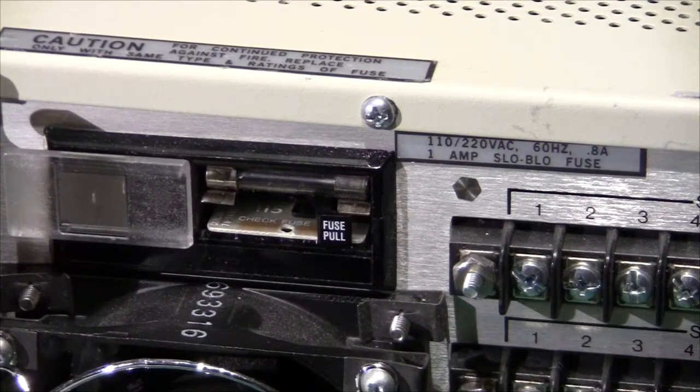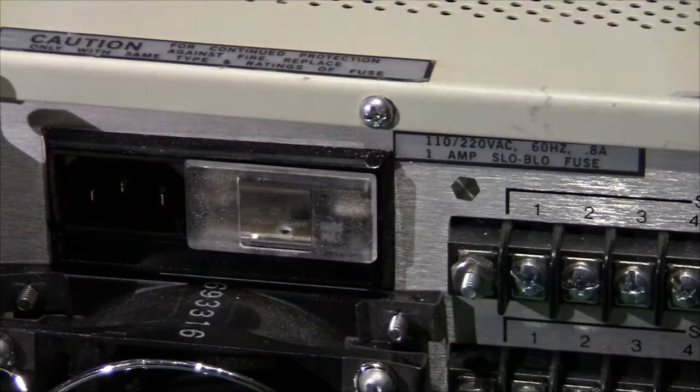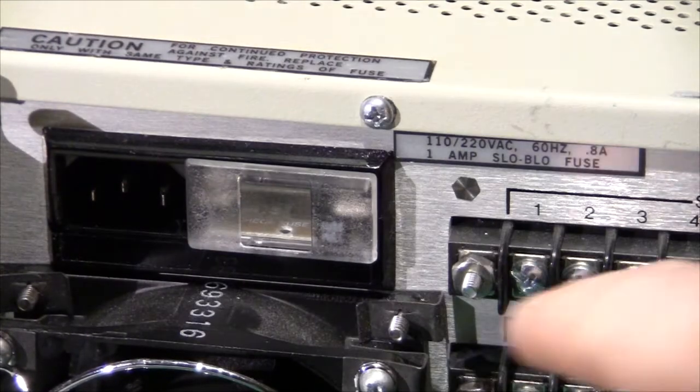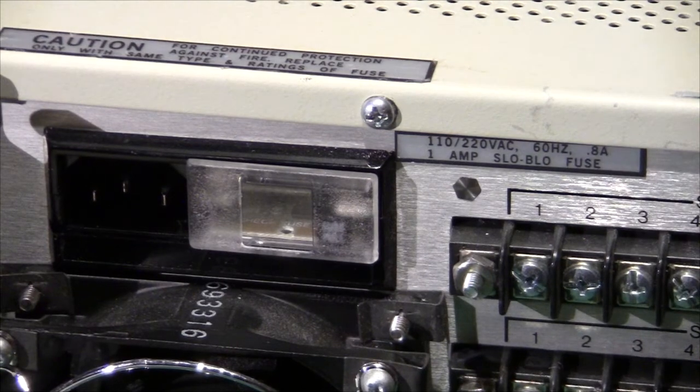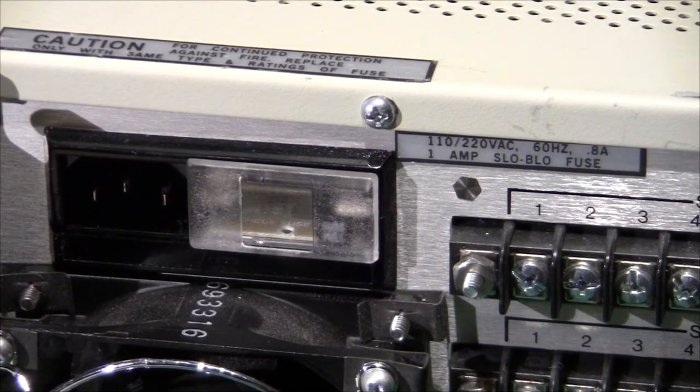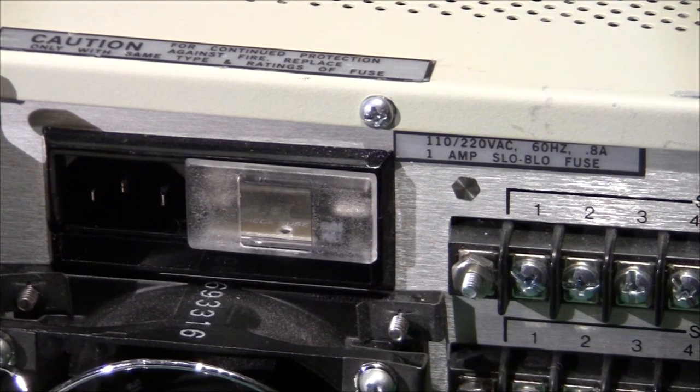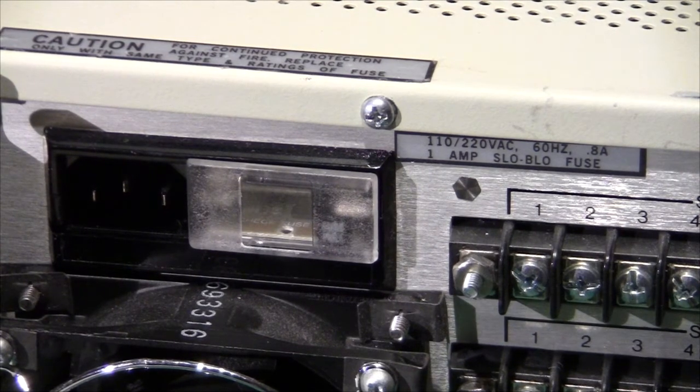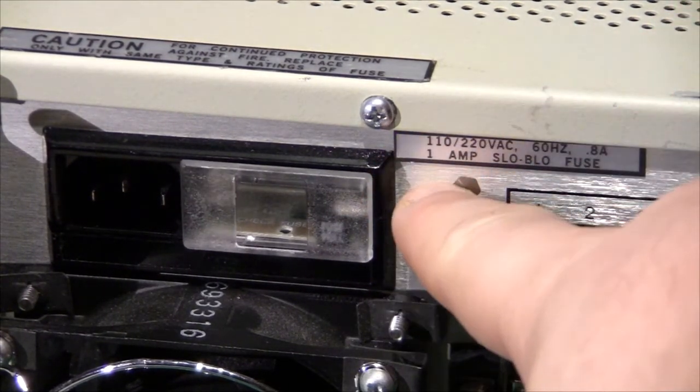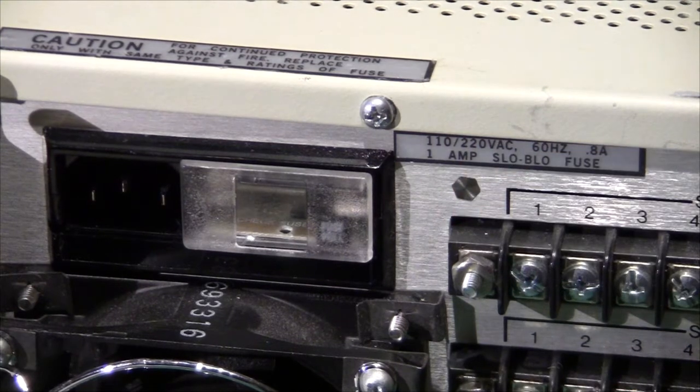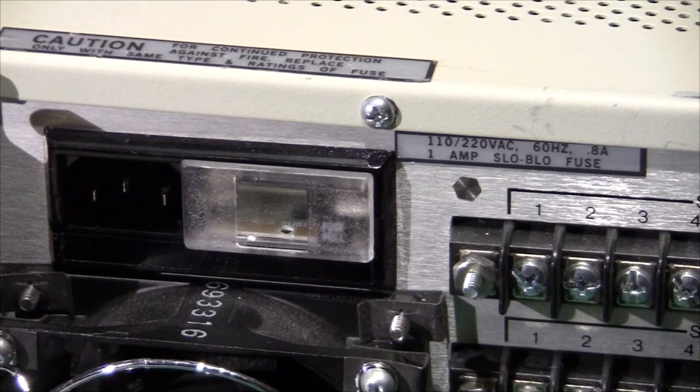So if we look at the back here, there's a fuse holder and a plug and then there's this label here that says 110 or 220 volt AC. And I just happen to know that this one is wired for 110. The or here, the 110 or 220, it actually means it's either one or the other. It's not like it can handle both 110 and 220 volts.